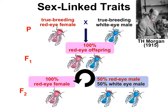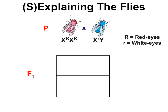Thomas Hunt Morgan won a Nobel Prize for this work. For the parental generation, Morgan crossed red-eyed females with white-eyed males. The resulting F1 offspring were all red-eyed. When the F1s were allowed to interbreed, there was a mixture of red-eyed and white-eyed offspring, but only in males. In the F2 generation, all of the females had red eyes, but 50% of the males had red eyes and 50% had white eyes. Mendel's model wasn't working to explain this, but Punnett squares were still valuable tools.